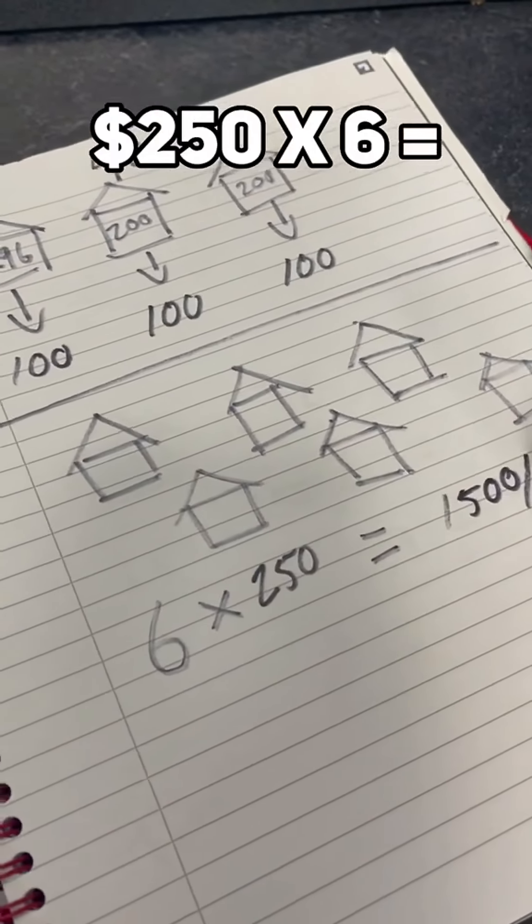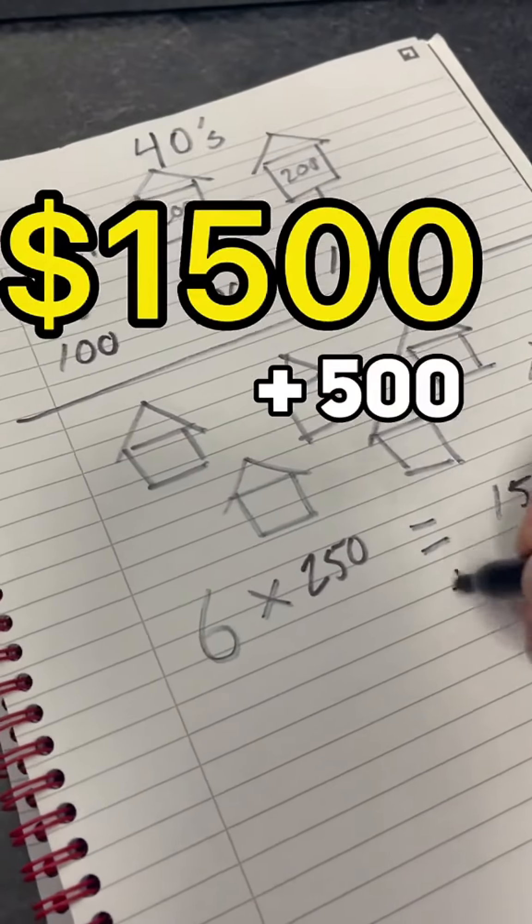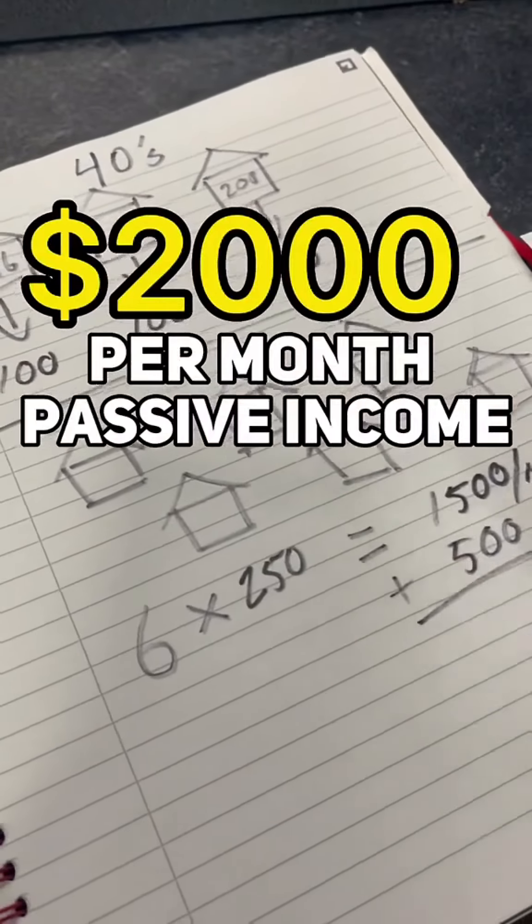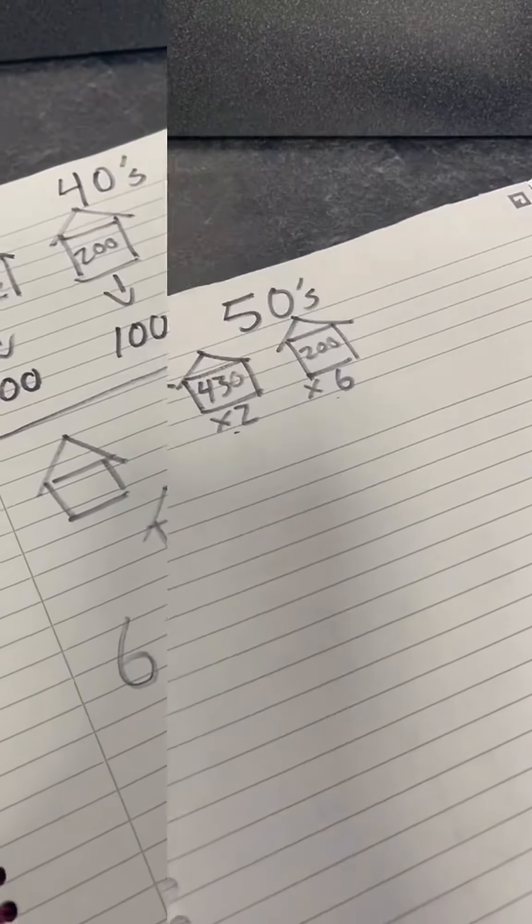$250 per month times six is $1,500 plus the $500 that we were previously getting. We're now up to $2,000 per month in passive income.